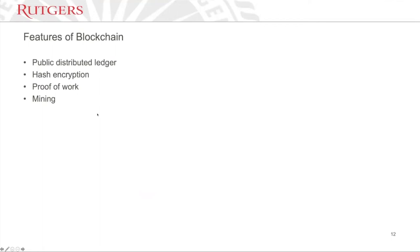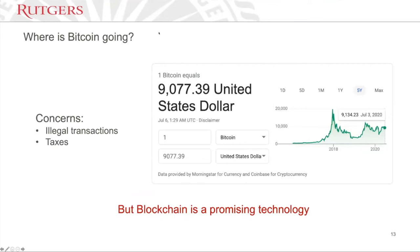To summarize the features of blockchain: it's a public distributed ledger, we use a hash function, we do proof of work, and the process of finding the answer in the proof of work is called mining.